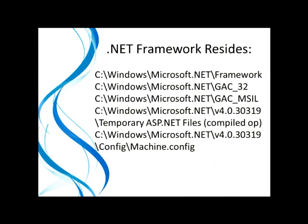It's important to emphasize where this stuff resides on the computer because everything is scattered in different places. This slide shows that the framework resides in the Windows folder at Microsoft.NET\Framework. At this level you have the GAC and also the temporary ASP.NET files — that's where the output of your compiled pages from Visual Studio goes, which is the intermediate language output. Also in these Windows folders you have the machine.config, if you're ever looking for that.